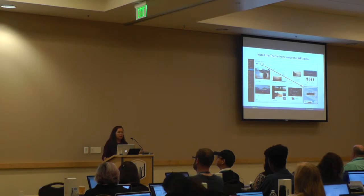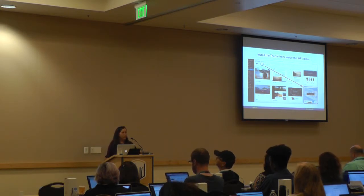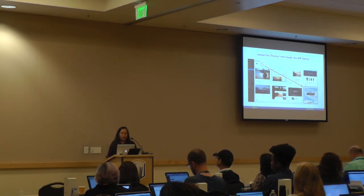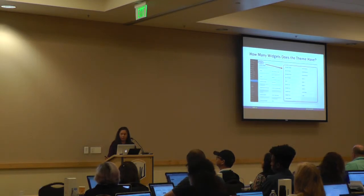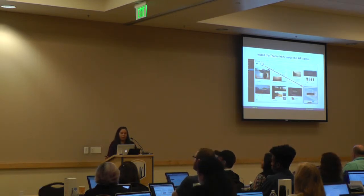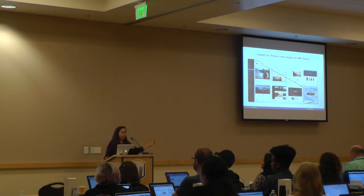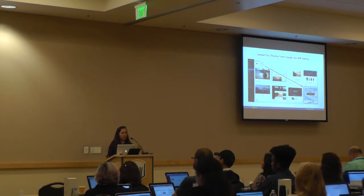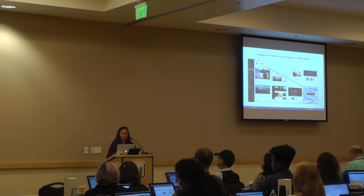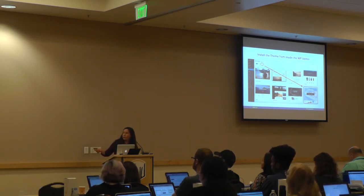I've decided I want to use the Sydney theme. You go inside and click to install it from inside WordPress. You could download it from wordpress.org and then upload it, but that's an extra step. It's so much easier to do everything from inside WordPress. You find it, you see where it's circled, and then you click to install it.